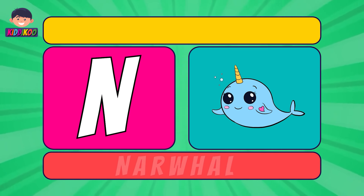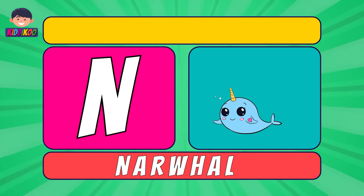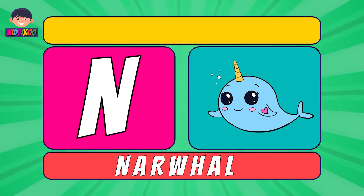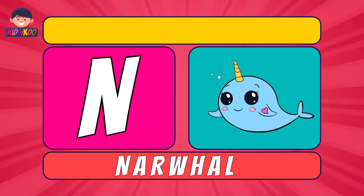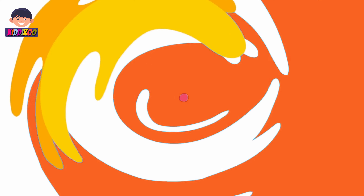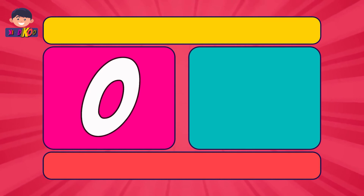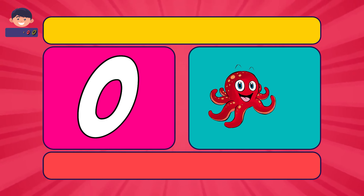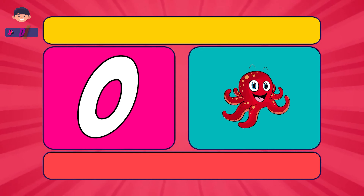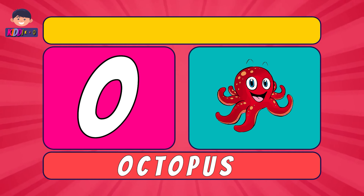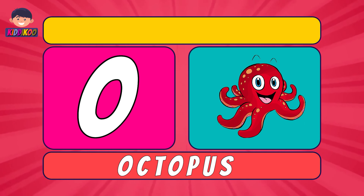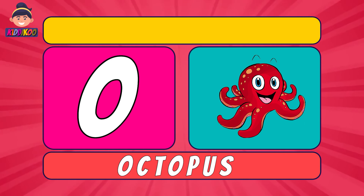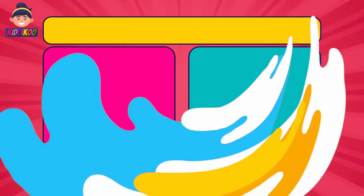Next letter is N. N for Narwhal. Narwhal. Next letter is O. O for Octopus. Octopus.